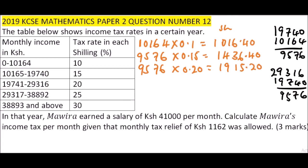Now we need to work from the total salary of 41,000. First of all, we subtract the first bracket amount of 10,164, which gives us 30,836.